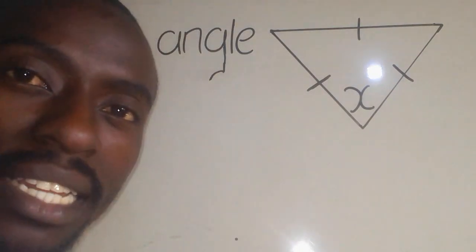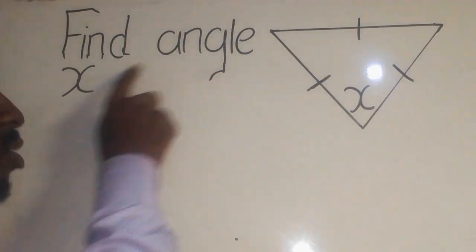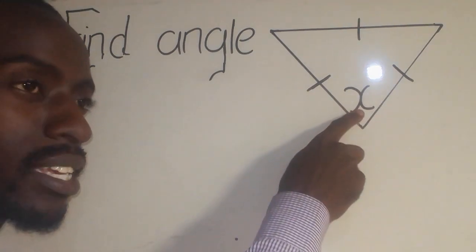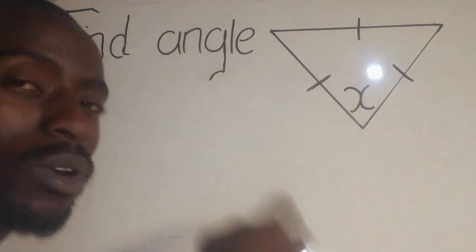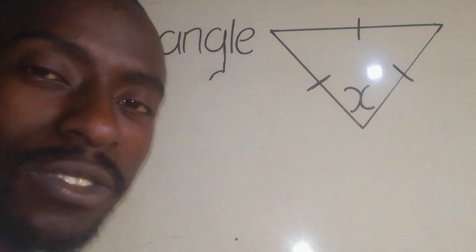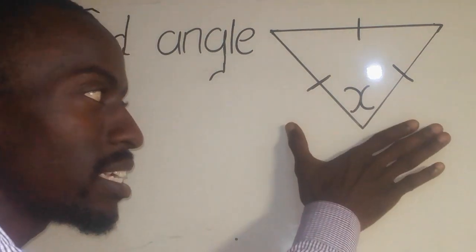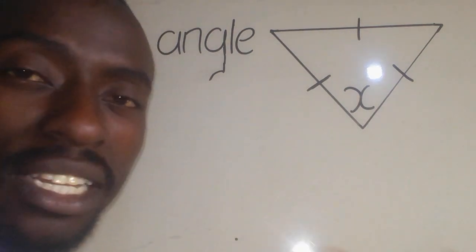We have a mathematics question that says find the angle x. This angle you're seeing here. When they say an angle, an angle is an amount of turning. This shape you're seeing here is a triangle.